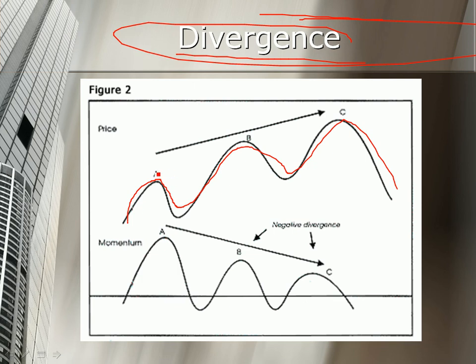divergence occurs when the price makes, say, a peak there, a peak there, and a peak there. So it's making higher highs, but the momentum indicator is making lower lows. That's a negative divergence in that example, and that suggests bearishness for the price. In other words, after the next peak, the price is likely to dip and dip sharply.